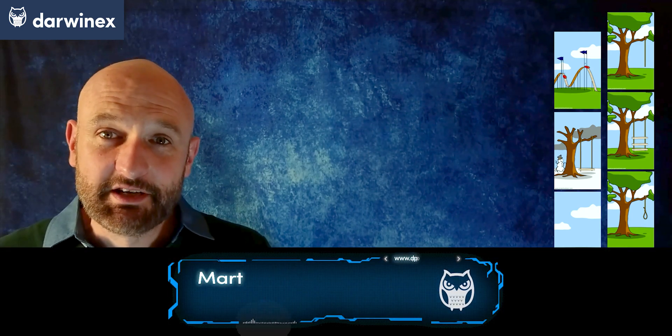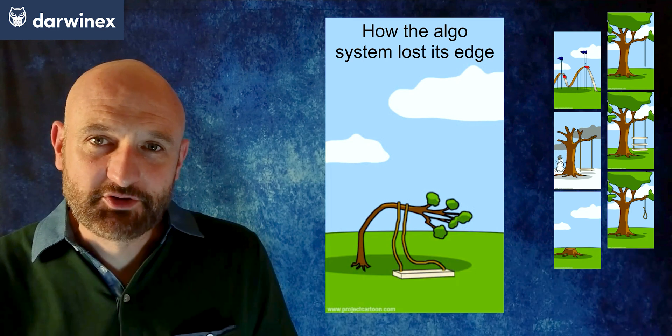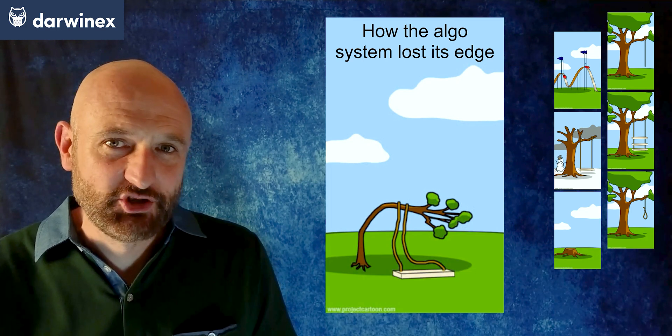Welcome to the final part of this collection of videos looking at how the famous tree swing images apply directly to algo trading. The next image takes a look at how the algo trading system lost its edge.